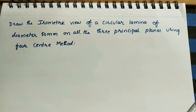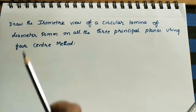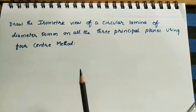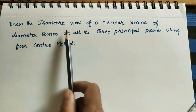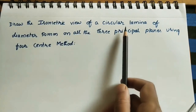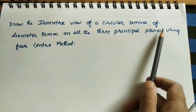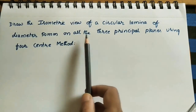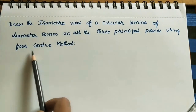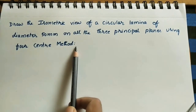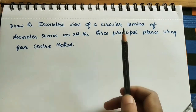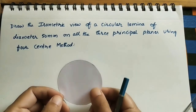Hi friends, welcome to my channel. Let us discuss how to do the isometric view of a given circular lamina. The given question is: draw the isometric view of a circular lamina of diameter 50 mm on all three principal planes using the four-center method. Here we are taking the circular plane.